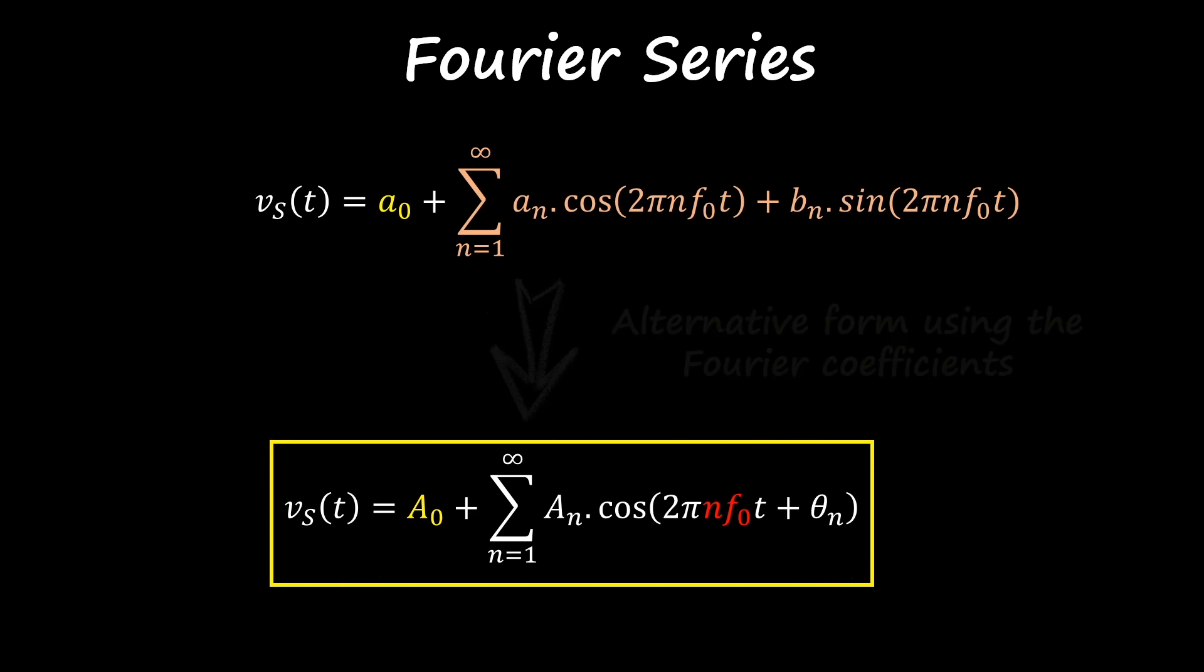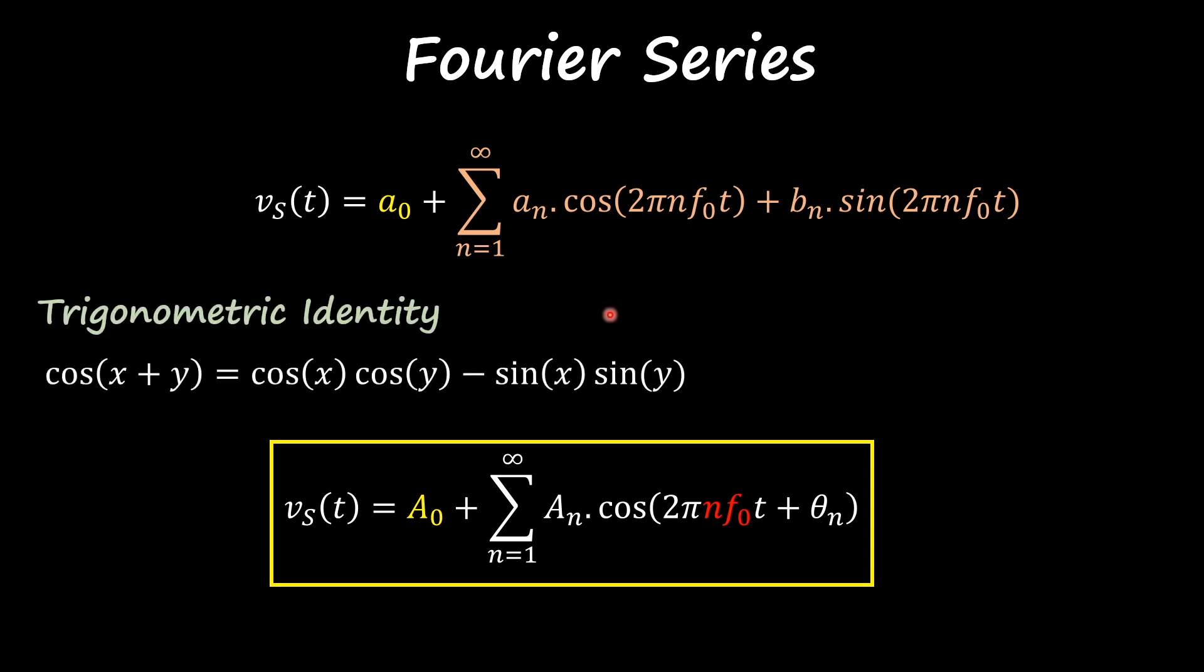You're probably wondering how is this one with just one sinusoidal waveform related with this series over here with two sinusoidal waveforms. It's actually because of a trigonometry identity where the cosine of x plus y equals this part over here.